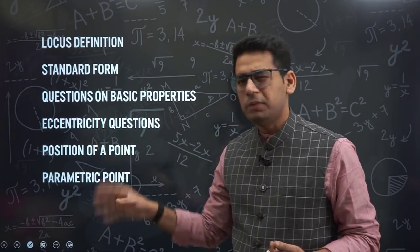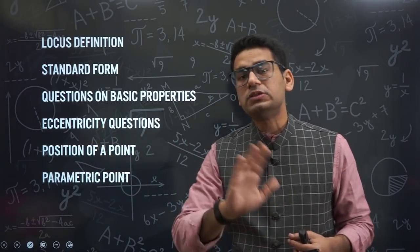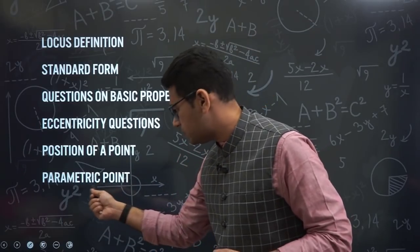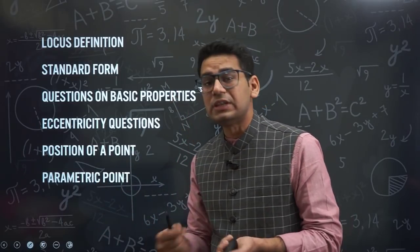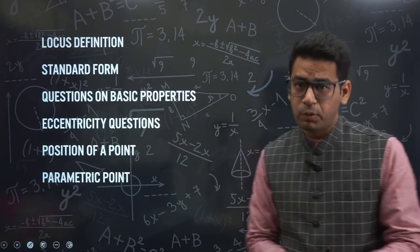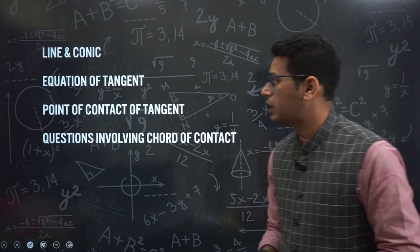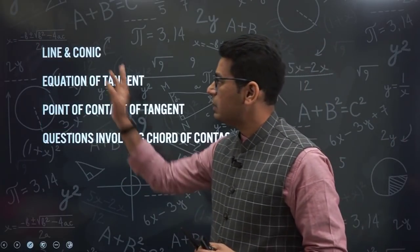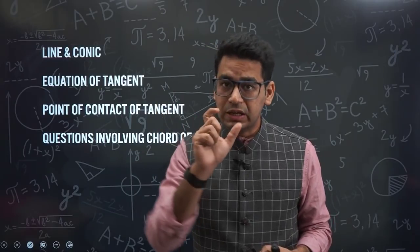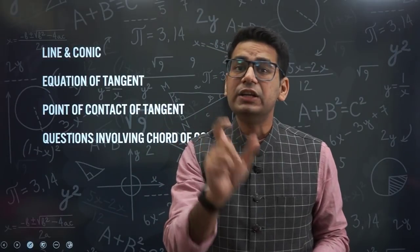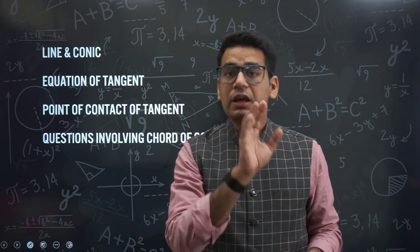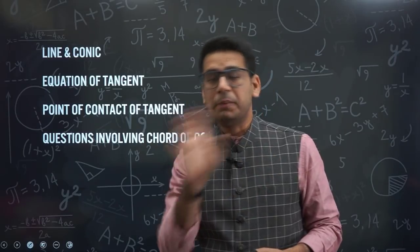Position of a point and parametric point are very relevant — though not extremely so, since at most one question can be found from parametric points. Line and conic is the most important topic with regard to both ellipse and hyperbola. Condition of tangency — derive which is the condition of tangency for ellipse and hyperbola.